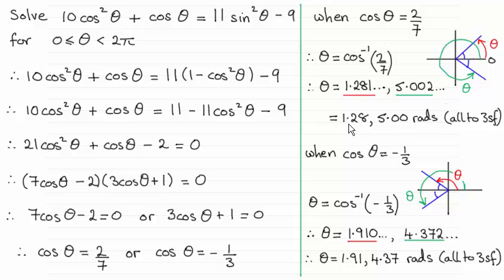We've got two here: 1.28 and 5.00 radians, and the answers here 1.91 and 4.37 radians, and all of these are given as requested to three significant figures. So I'll take you through this just in case there were any problems.